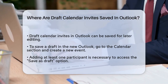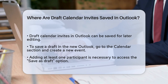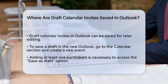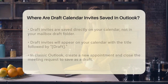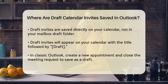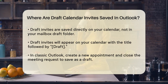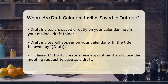When you create a new meeting invite in Outlook but aren't ready to send it, you can save it as a draft. In the new Outlook, you go to the calendar section and create a new event. Once you've added at least one participant, you can select the send dropdown and choose save as draft. This option will only appear if you've added participants to the invite. The draft meeting invite is then saved directly on your calendar, not in your mailbox draft folder. You'll see it listed on your calendar with the title of the event followed by 'draft,' making it easy to find and edit later.